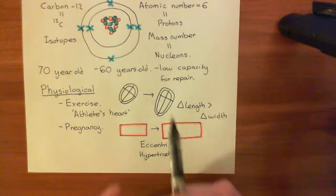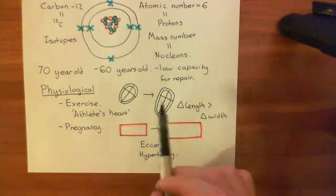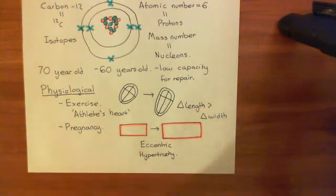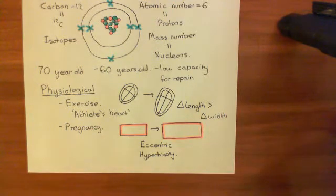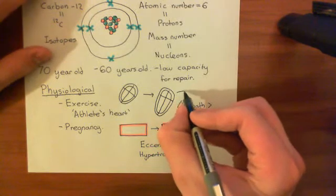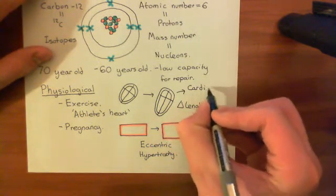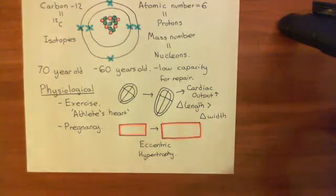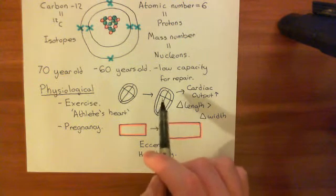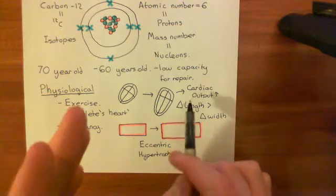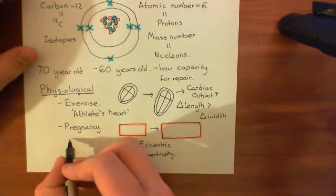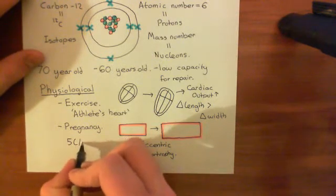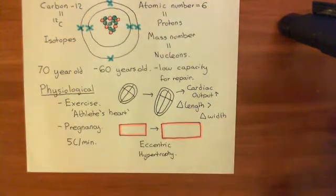Overall, the heart becomes larger and all four chambers will be capable of accommodating a greater volume of blood. The amount of blood the heart can pump from the venous side to the arterial side goes up, so physiological hypertrophy results in cardiac output going up. In a normal adult's heart, cardiac output is usually around 5 litres per minute, but in people with physiological hypertrophy it will be greater than 5 litres per minute.